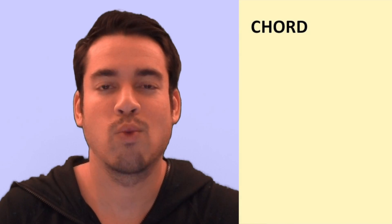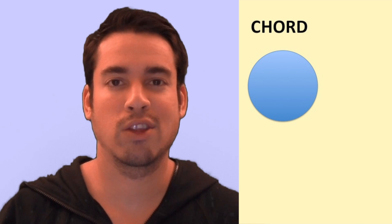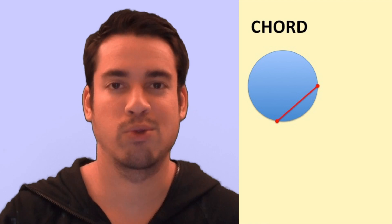The next definition that you need to know is a chord. And while a diameter is essentially a line segment that goes from one edge to the other that goes through the center, a chord is a line segment, but it doesn't necessarily go through the center.